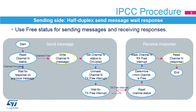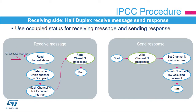When a channel-free interrupt, or response-ready, is generated, the sending side determines which channel is freed and masks the corresponding channel-free interrupt. Subsequently, the response can be read from the channel data buffer. When a channel-occupied interrupt, or message available, is generated, the receiving side determines which channel is occupied and masks the corresponding channel-occupied interrupt. Subsequently, the message can be read from the channel data buffer. The channel will only be freed once the receiving side has sent the response to the channel data buffer. Once the response is written, the channel status flag is cleared to free, or response-ready, and the channel-occupied interrupt is then unmasked.